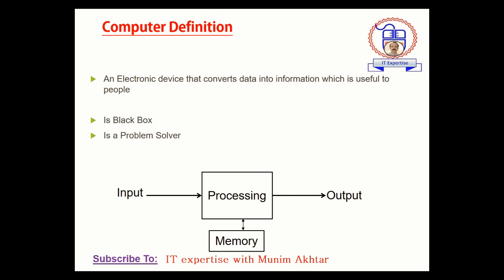A computer is an electronics device that converts data into information which is useful to people. It is actually a black box — just when you put the data with the help of any input devices, the black box processes the entire data and after that sends the processed data to the output screen, which is the monitor.